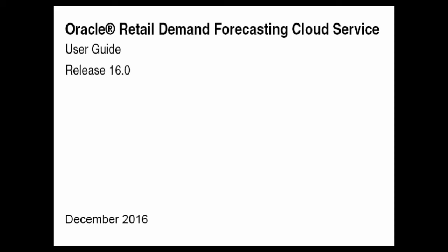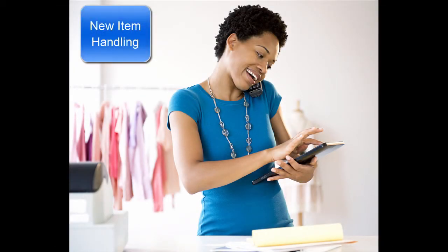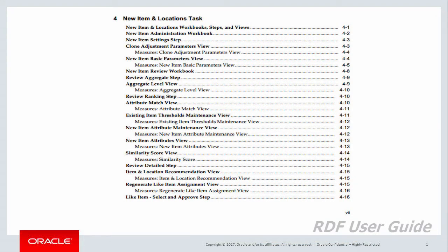We will start with our first topic: new item handling. Retailers are faced with how to handle new items in the store almost every week. These items need to be replenished, so they require a forecast. However, without sales there is no forecast for that new item. RDF has several ways of generating forecasts for these new items that do not have historical sales. Let's go look at the user guide to learn more about substitute methods.